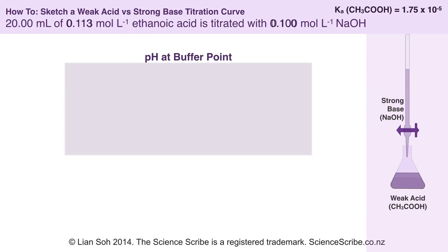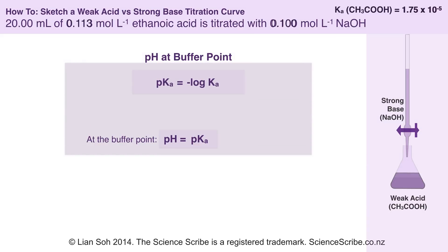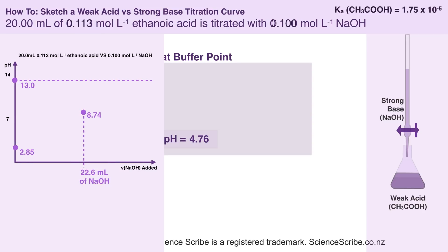The last point I'm going to calculate is the buffer point — it's the easiest one to calculate. It's just pH = pKa. My question has told me a value for Ka, so I need to convert that into pKa using the formula pKa = −log(Ka). Moving in the value for Ka and typing that on the calculator tells me that my pH at the buffer point is 4.76. The buffer point occurs at halfway towards equivalence point, so at 11.3 mils, my pH is 4.76.